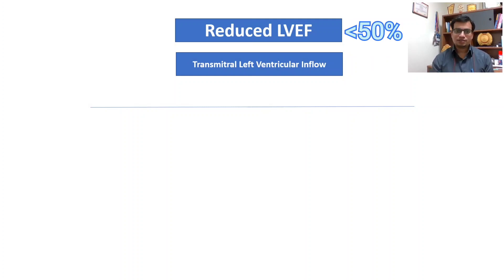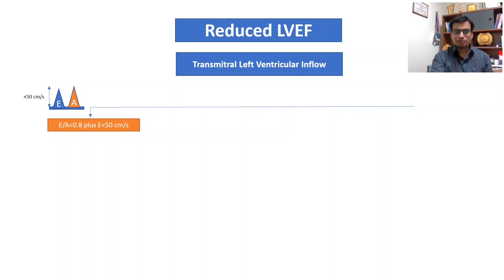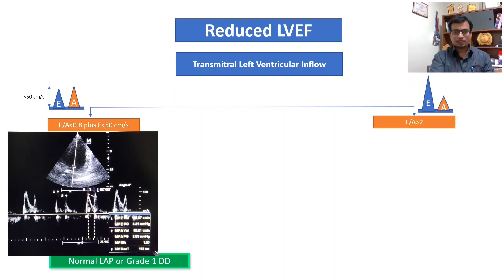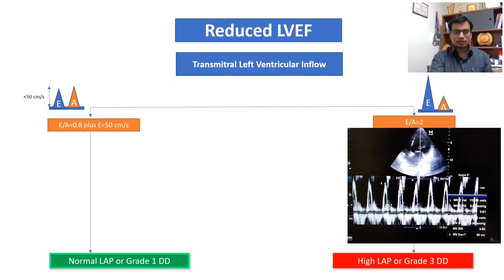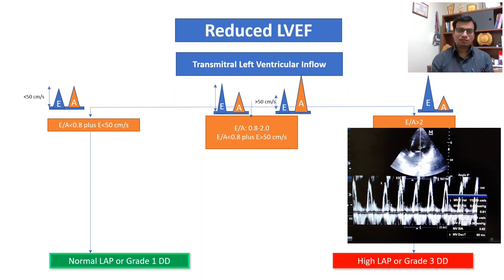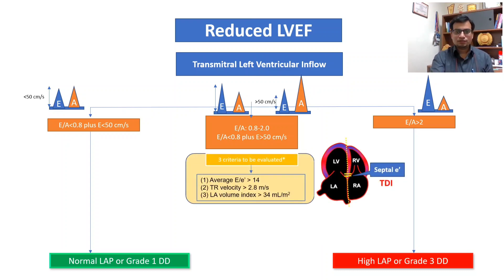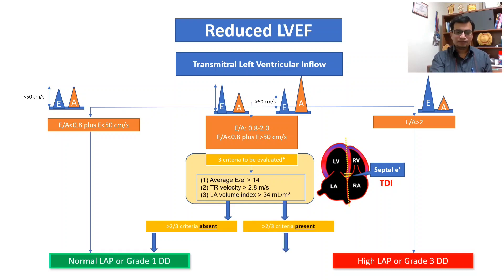For patients with depressed LV ejection fraction, a second algorithm is used with the addition of the E/A ratio. If the E/A ratio is less than 0.8 plus E is less than 50 cm/s, LAP is considered normal or grade 1 diastolic dysfunction. If E/A is more than 2, a restrictive flow pattern and high LAP or grade 3 diastolic dysfunction is present. In cases where E/A is between 0.8 to 2, or E/A is less than 0.8 but E is more than 50 cm/s, we assess three further criteria: E/E' more than 14, TR jet velocity more than 2.8 m/s, or LA volume index more than 34 ml/m². If more than 2 criteria are absent, this indicates normal LAP or grade 1; if more than 2 are present, this indicates high LAP or grade 2 diastolic dysfunction.